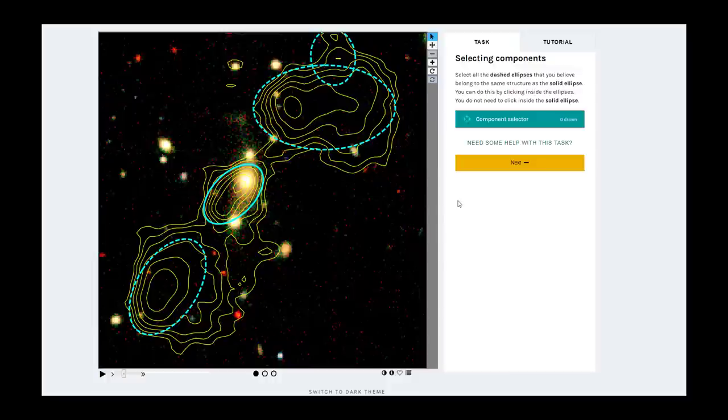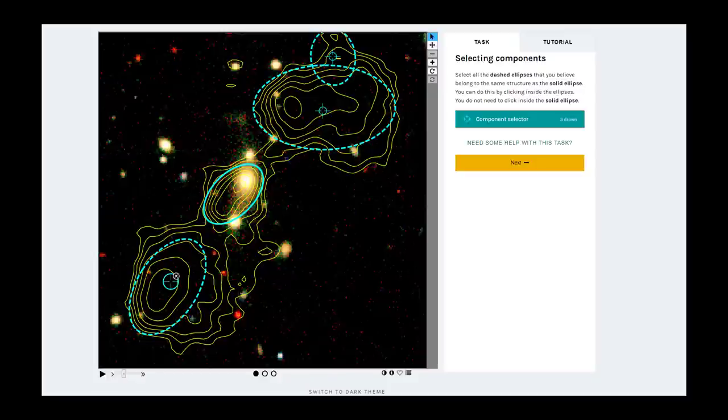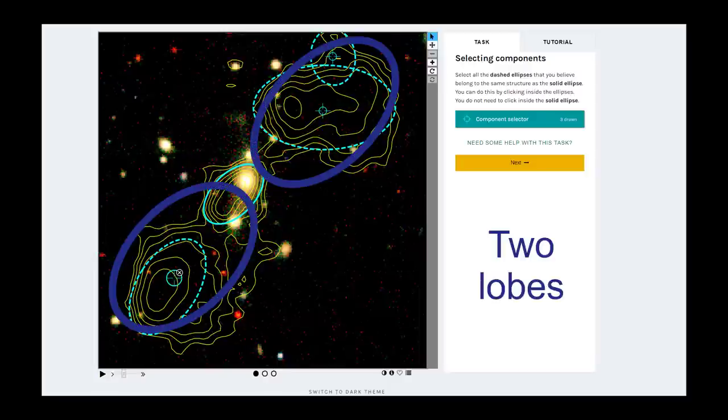The first task is named component selection. Remember that all of the blue ellipses that you see in the image are different parts of the yellow contour lines that we believe belong together. The goal of this first task is to select all of the dashed ellipses that you believe belong to the same structure as the one ellipse with a solid line. You can do this by clicking on component selector and clicking in the center of the ellipses that you think belong together. If you need to, pause the video at this point and try this for yourself. Do not worry about misclicking. You can always move the marker to another ellipse or remove it entirely.